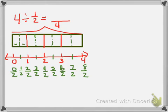And you can count them. 1, 2, 3, 4, 5, 6, 7, 8. So I can say that there are 8 halves.